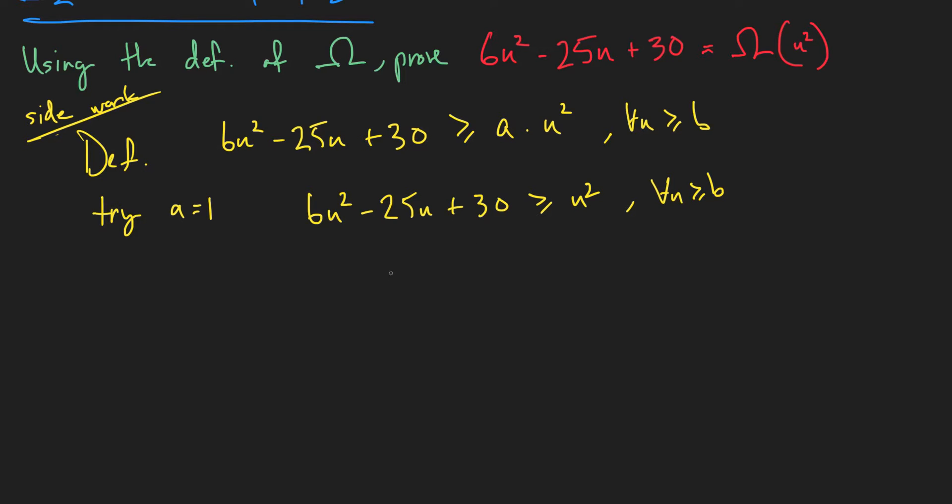So let's minus n squared from both sides. We have 5n squared minus 25n plus 30 is greater than or equal to 0.